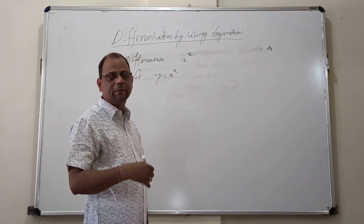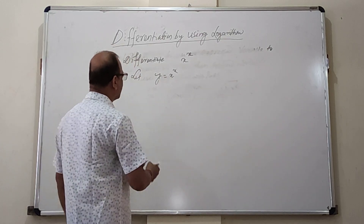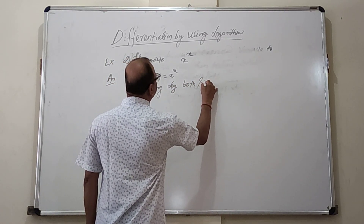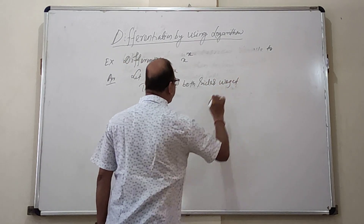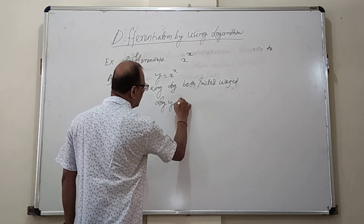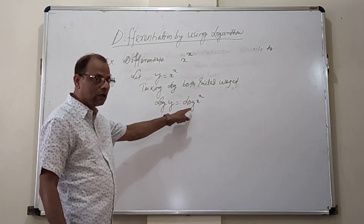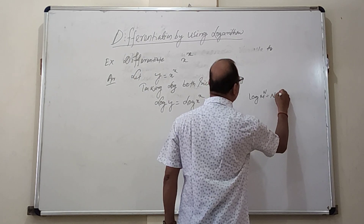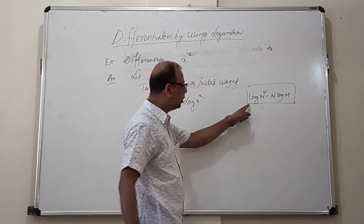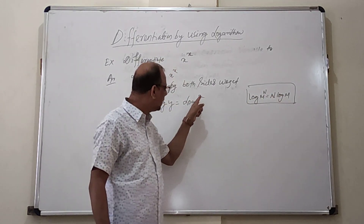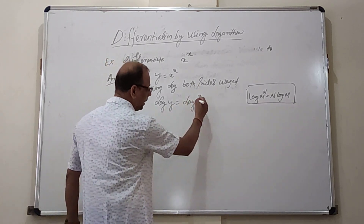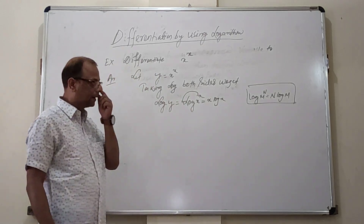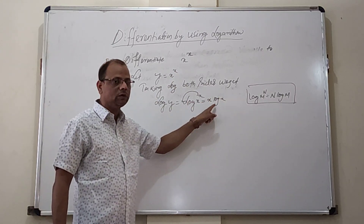To find the derivative, taking log both sides, we get: log y equals log of x to the power x. Using the formula log(m^n) = n·log(m), we shift the power, getting log y equals x·log x. The power form is now converted into a simple product form.